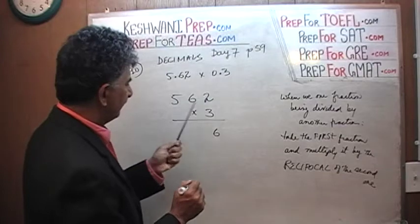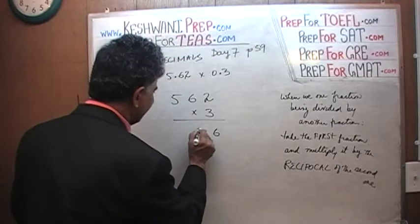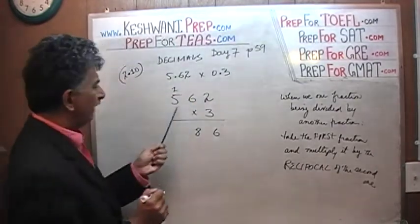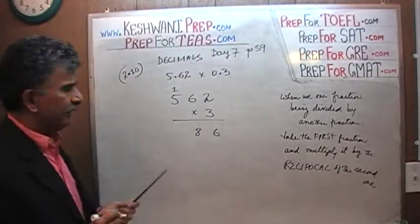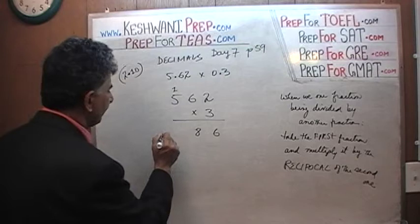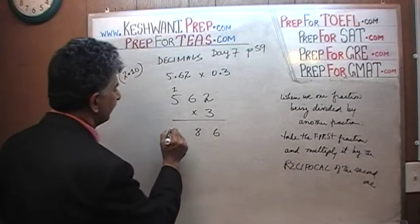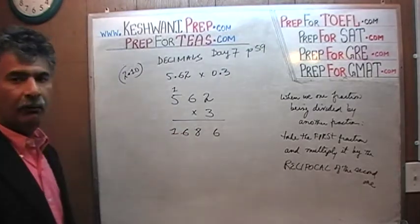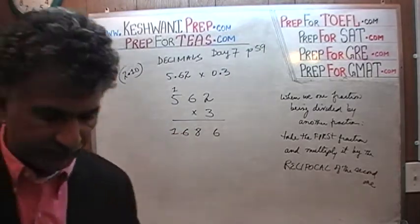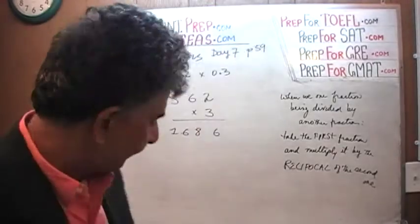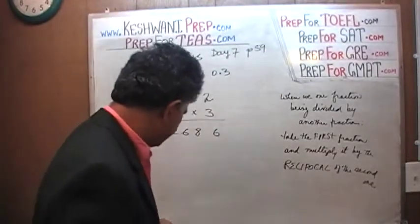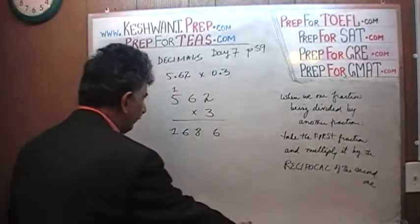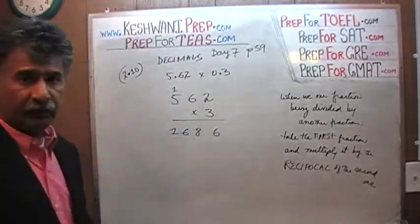6 threes are 18 — write 8, carry 1. 5 threes are 15, plus 1 is 16. Now we are going to worry about our decimal. Watch what happens. Of course, in reality we do not have 562 times 3 — we have 5.62 times 0.3.